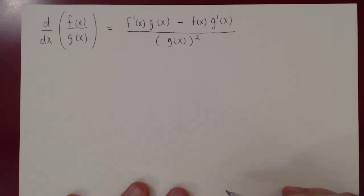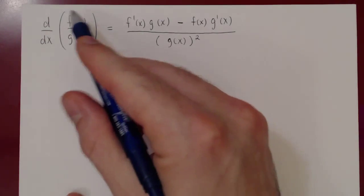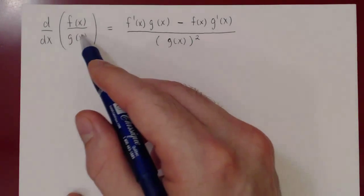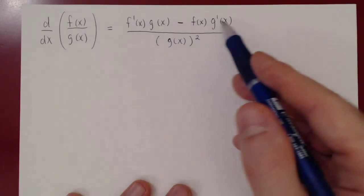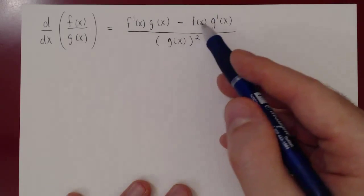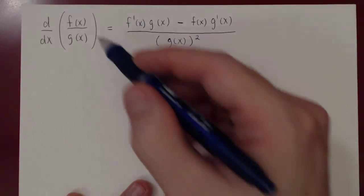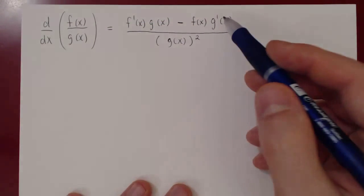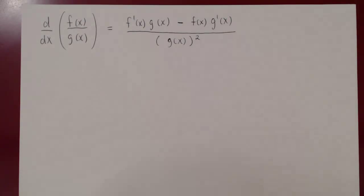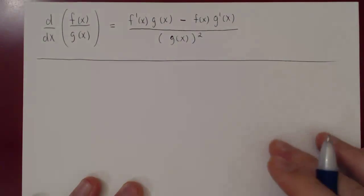That is the quotient rule. It's actually quite simple — all you need is the derivative of f(x) and the derivative of g(x), then plug them into the formula. Find the derivative of the top and the bottom of your fraction, plug them in, do a bit of algebra to simplify, and you have the derivative of a quotient of two functions.